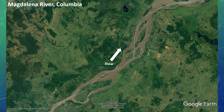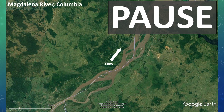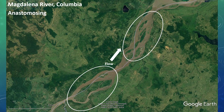Now let's look at the Magdalena River in Colombia. Did you guess it was an anastomosing river? Notice the multiple larger channels dissecting these vegetated islands circled here. This is clearly not a straight or meandering river; however, we don't see lots of exposed sediment or a high density of smaller channels like we would expect to see in a braided river.